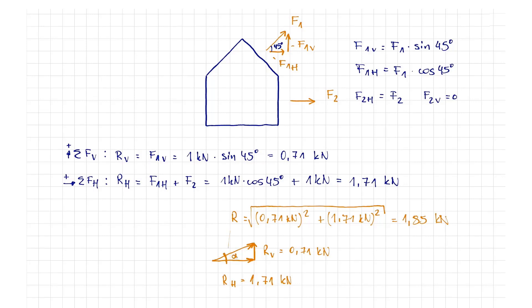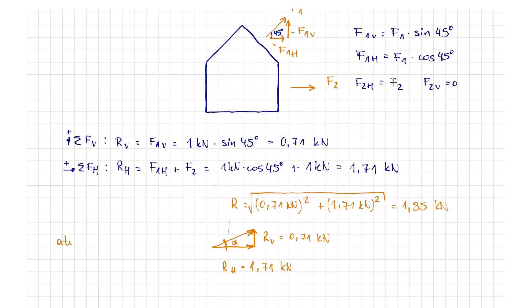The resultant angle from the horizontal is determined from the arctangent of the opposite side length divided by the adjacent side length. This is calculated as 22.5 degrees.